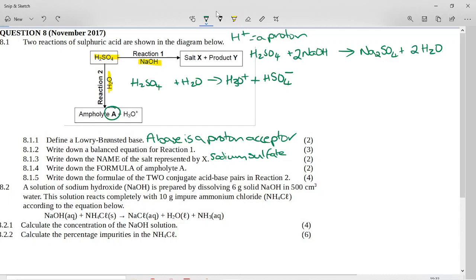But that is the balanced equation for what's going on in reaction two. But what are they looking for? They are looking for the ampholyte, this one here, which is HSO4 minus.